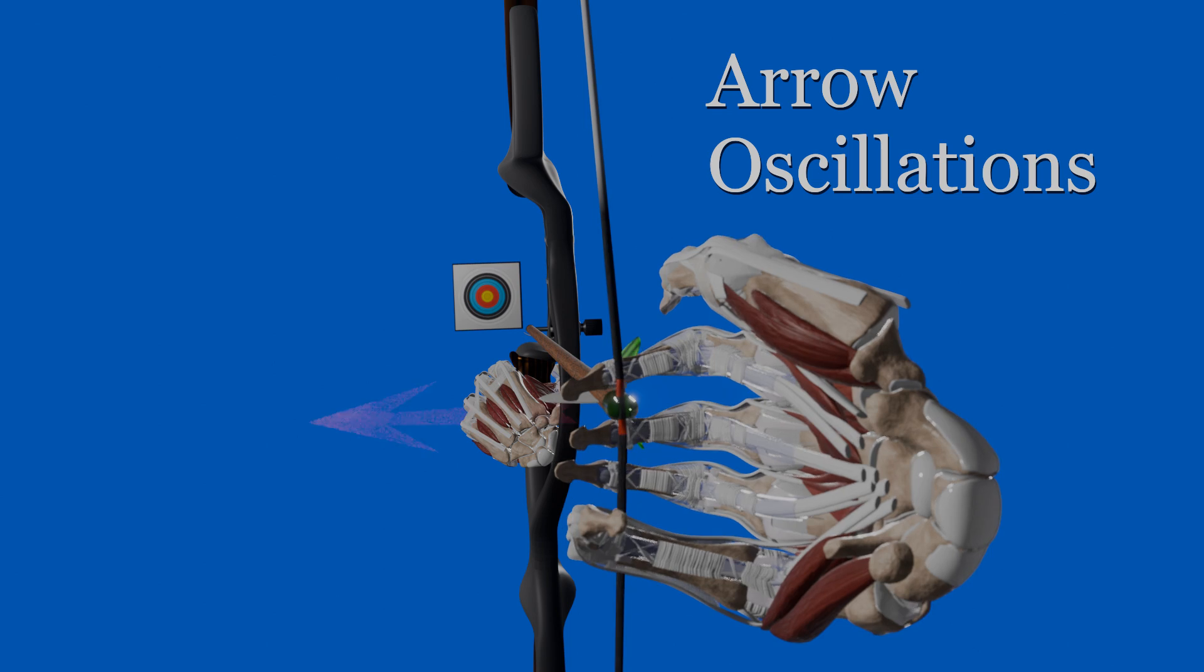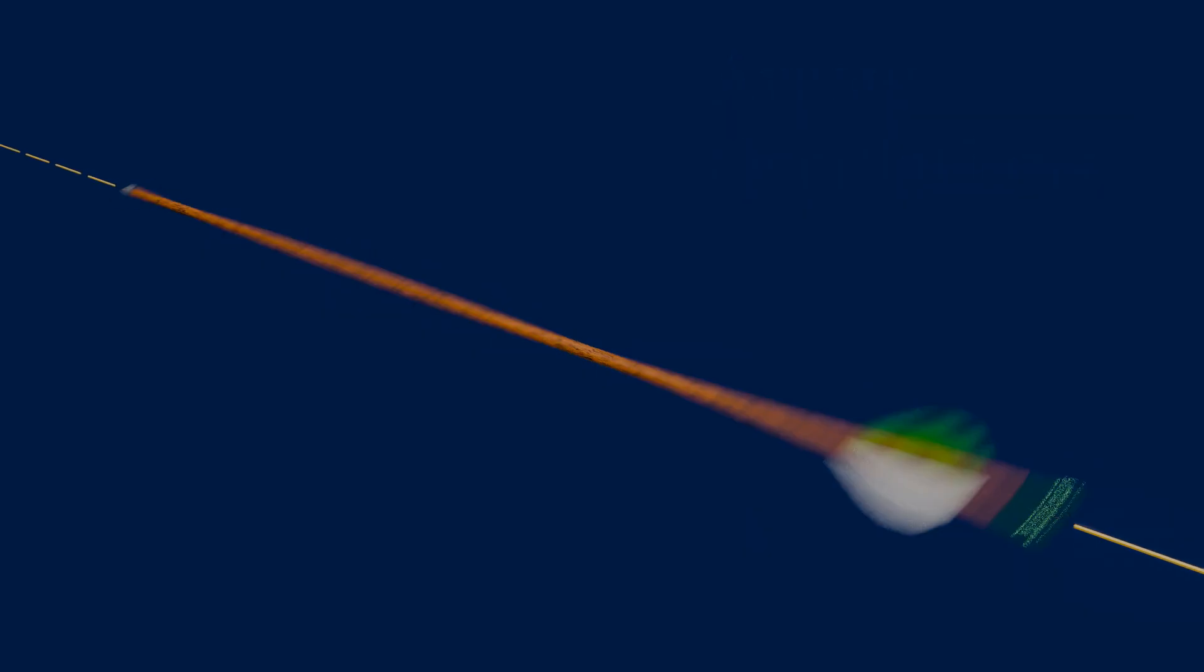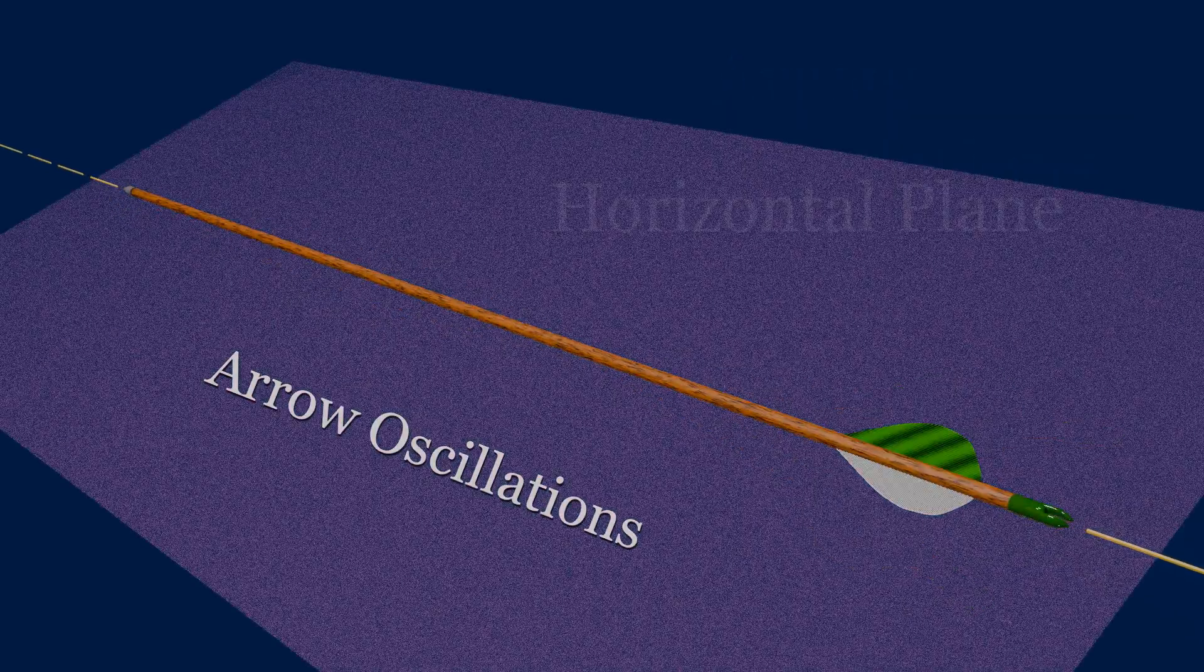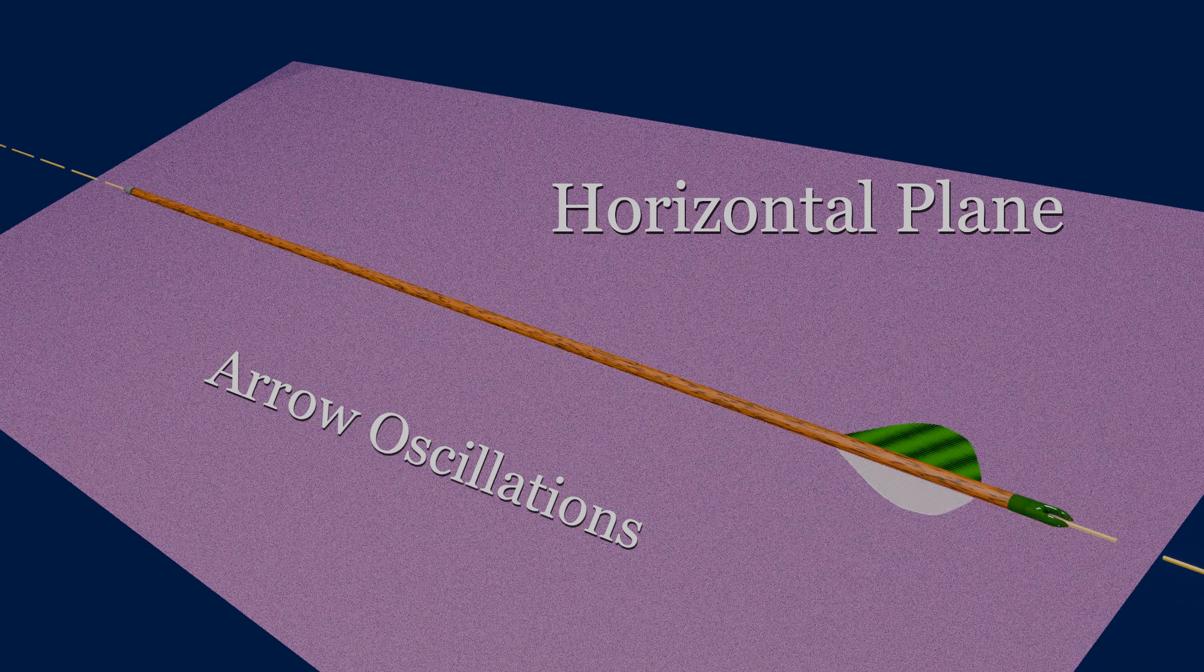Compressive forces from the string will result in forward acceleration and bending of the arrow shaft. The bending produces vibrations or oscillations in the arrow. With a finger release, the vibrations are primarily horizontal, and with mechanical releases, primarily vertical. It is rarely purely one direction or the other.